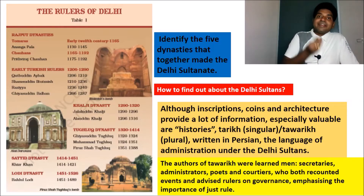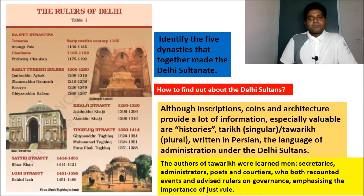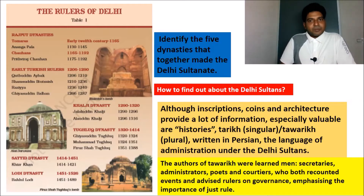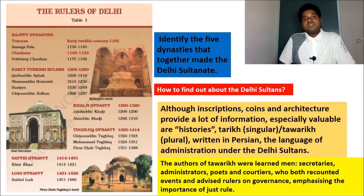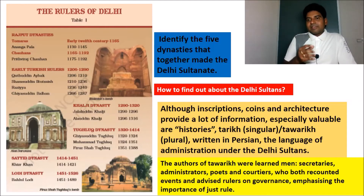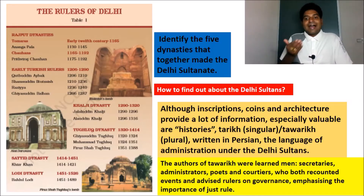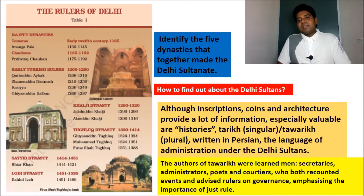Who used to write these Tariks or Thawariks? The authors of Tarik or Thawariks were learned men. These people worked alongside the king as secretaries, administrators, poets, and courtiers. They both recounted events and advised the rulers on governance, emphasizing the importance of just rule. So the people working with the king — assisting in administration, handling court and poetic work, and advising the king on governance — were the authors of Thawariks.